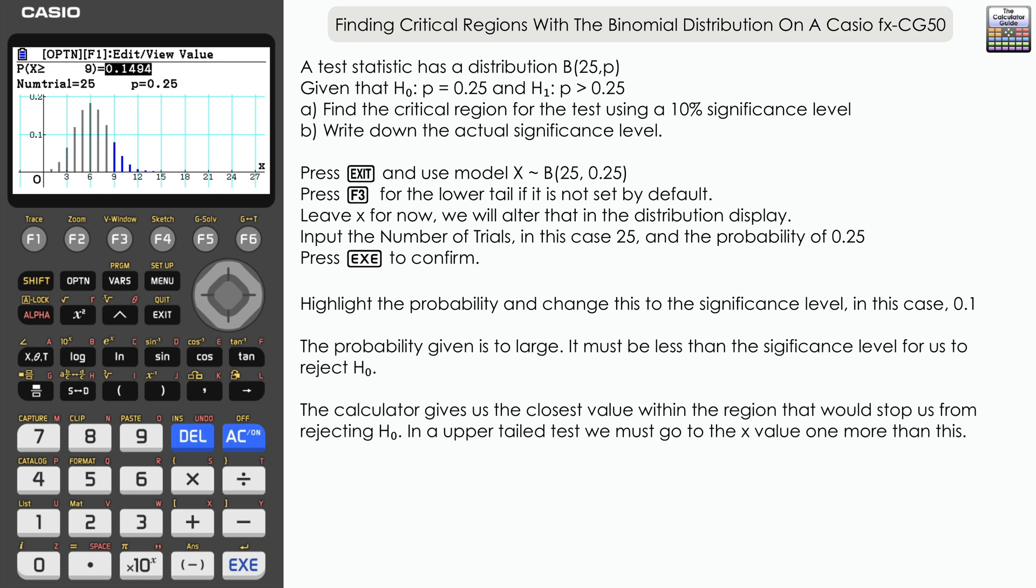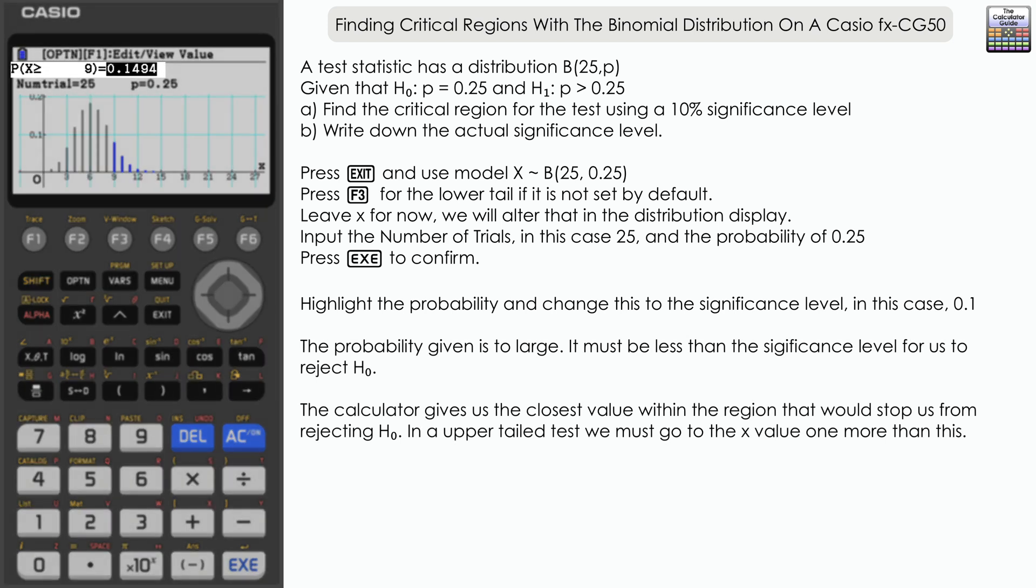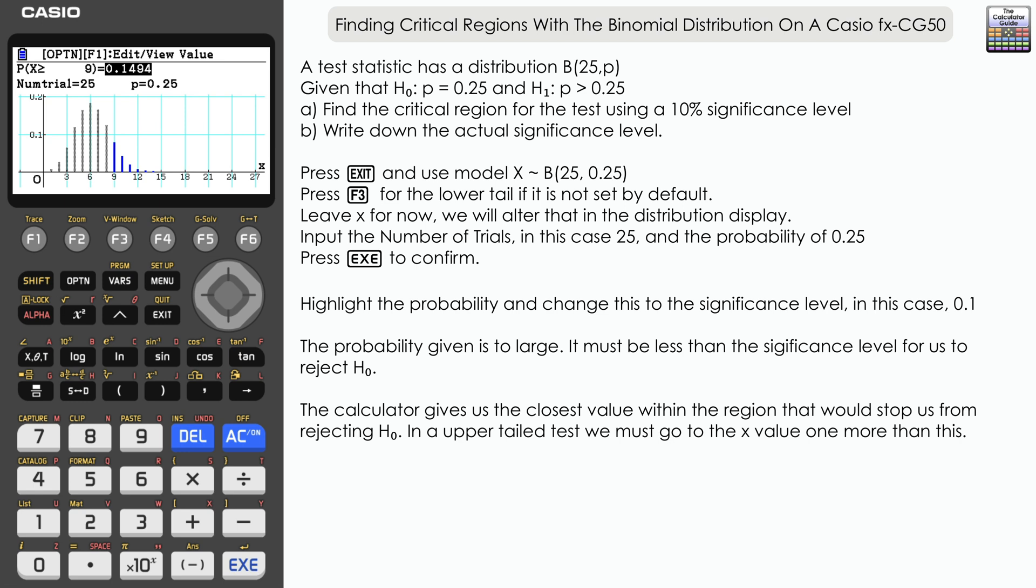...what's happened is we've got x ≥ 9. The calculator has focused on the closest value that is within the acceptable region. You can see that the probability is given, 0.1494. That is far too large—that is not less than or equal to 0.1 or 10%—so what we need to do, as we're in the upper tail, is we need to go one greater than the x value given.